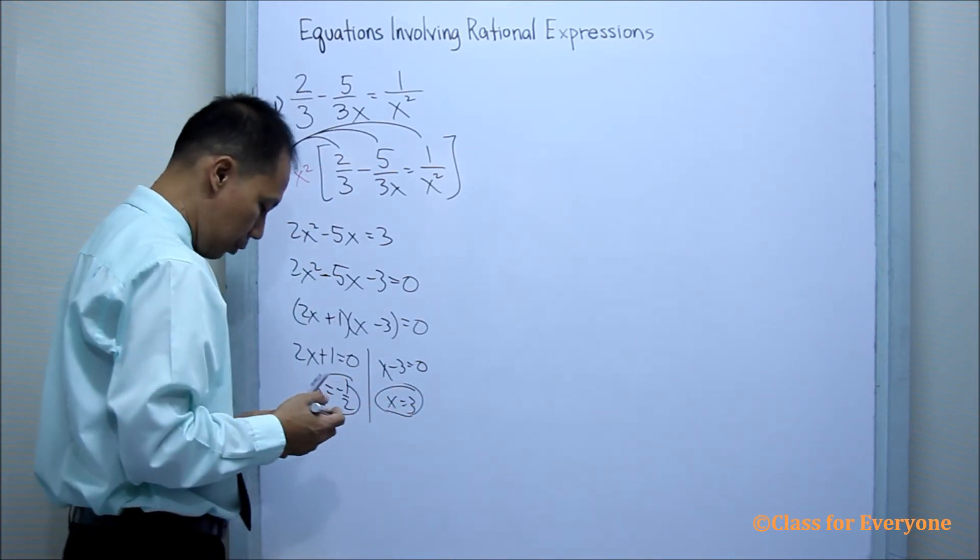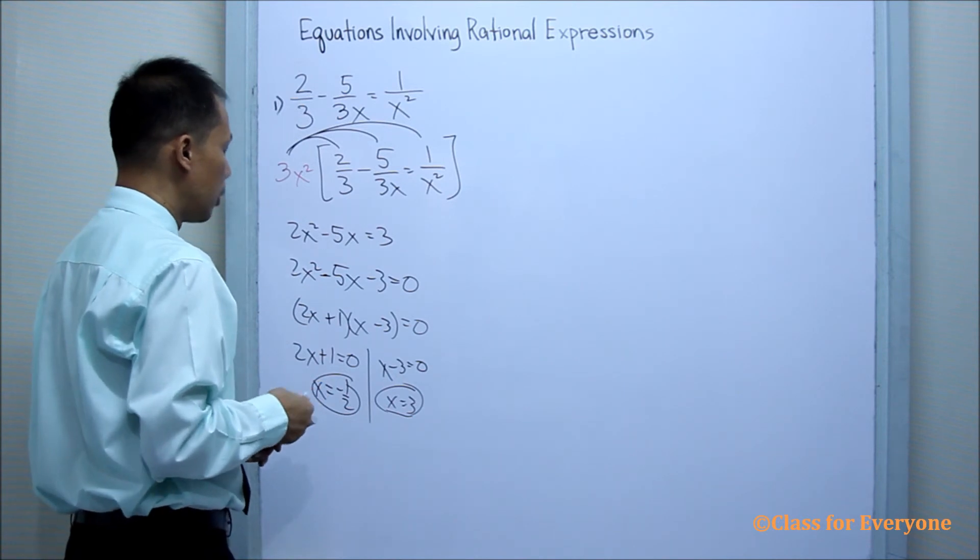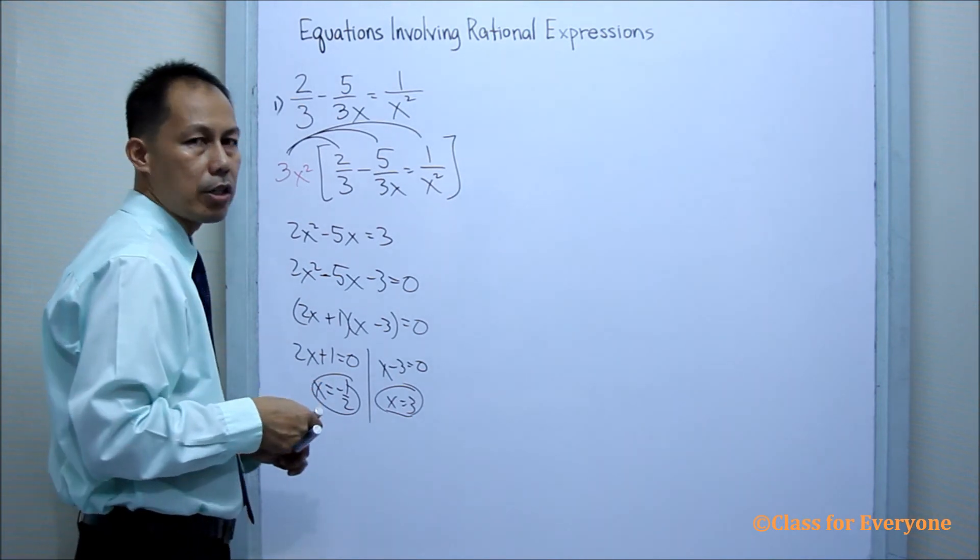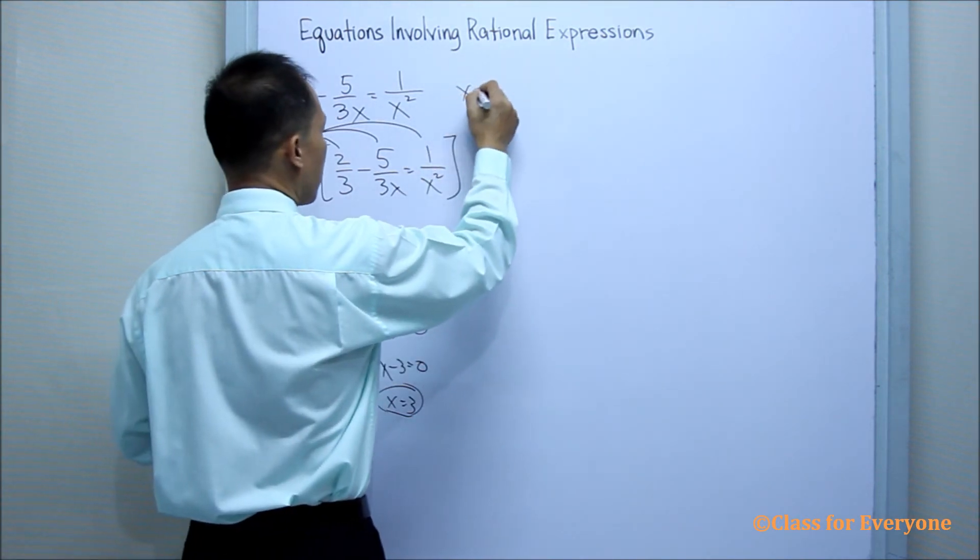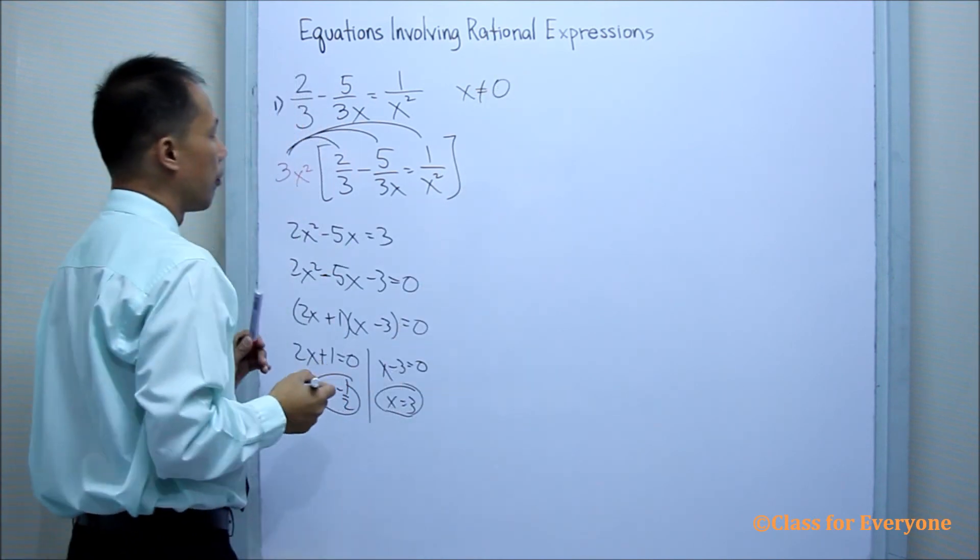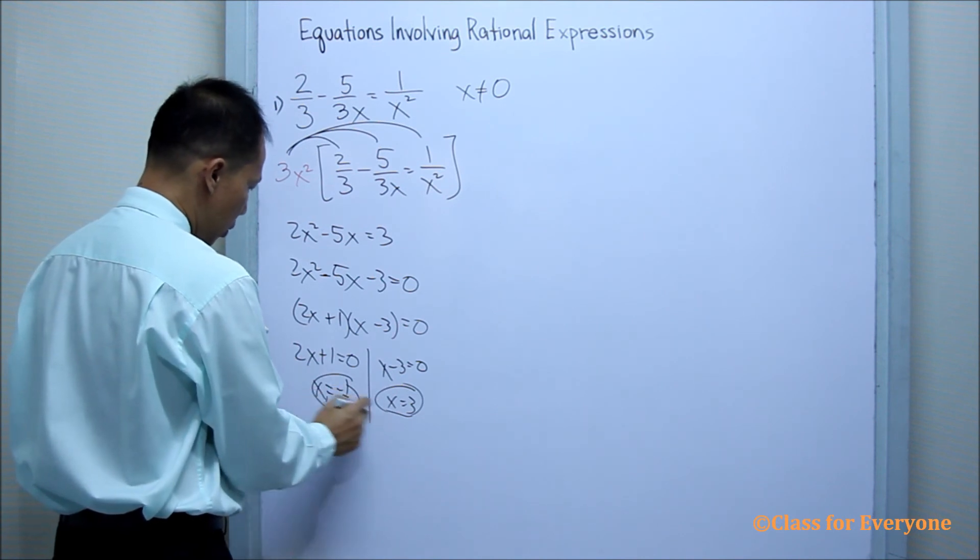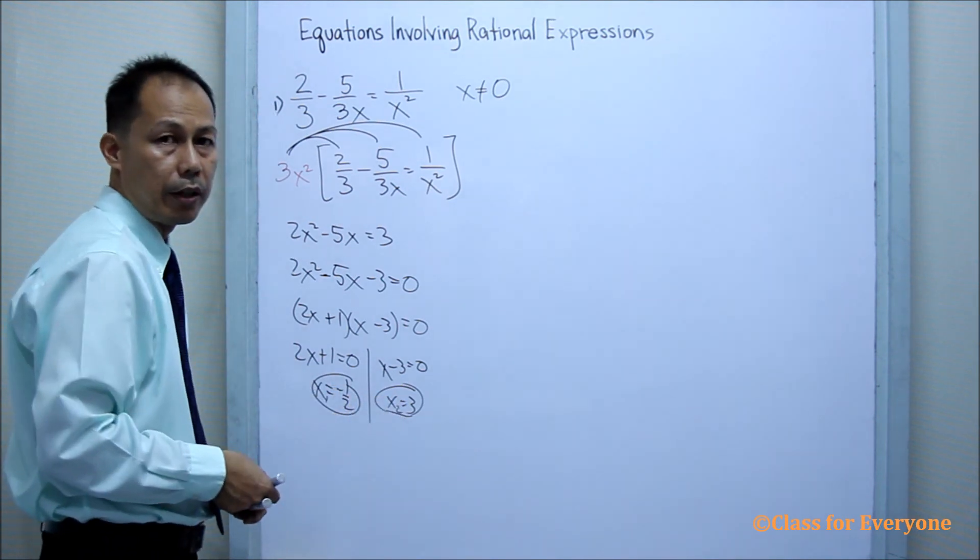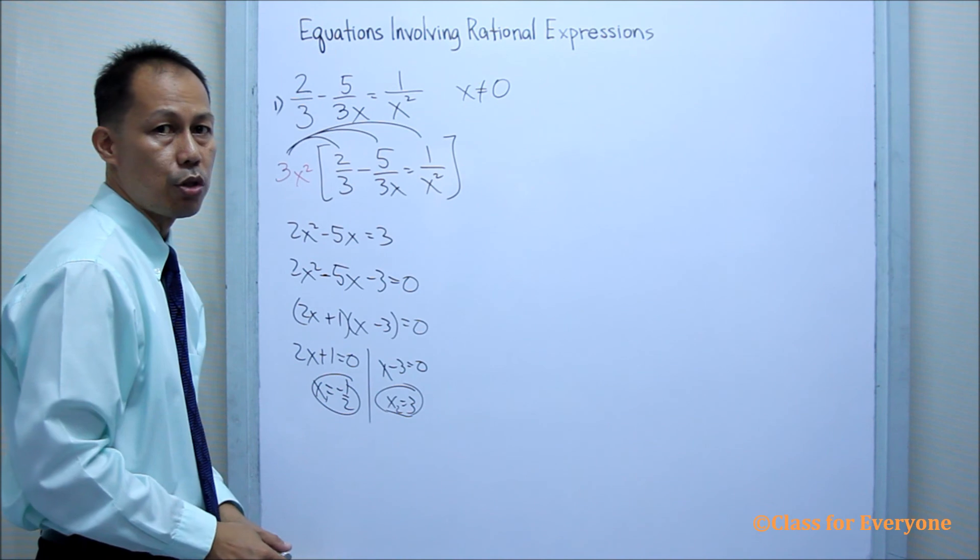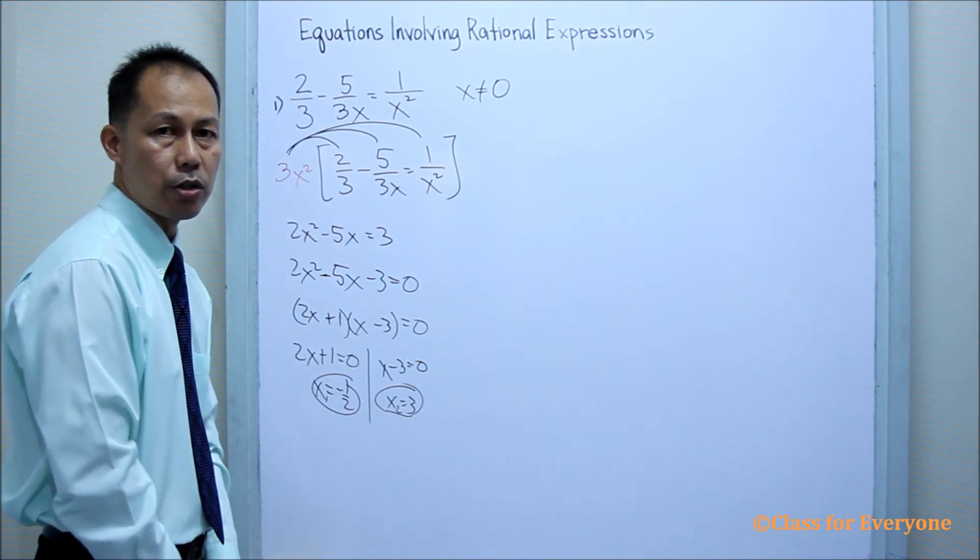In the rational expression, the only restriction is that x should not be equal to 0. Since x is not equal to 0, these two values of x will be accepted and is the solution set of the rational expression.